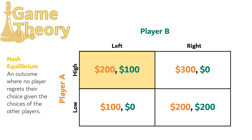What about the other outcomes — are they Nash Equilibria too? At high right, player A is happy with their choice of high, earning them $300 instead of the $200 a choice of low would have gotten them. But player B has regret: they got $0 by choosing right, and they would have gotten $100 if they chose left instead. So this is not a Nash Equilibrium because player B regrets their choice.